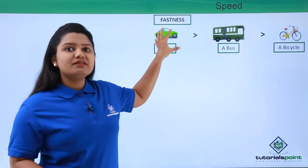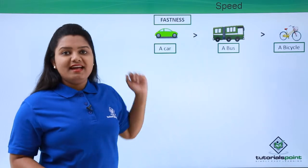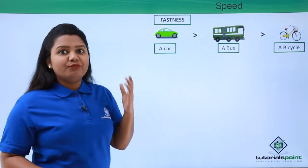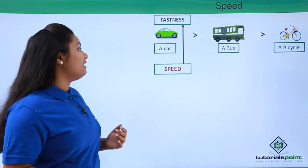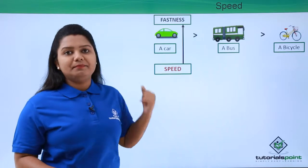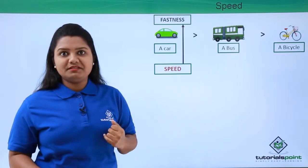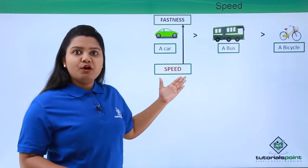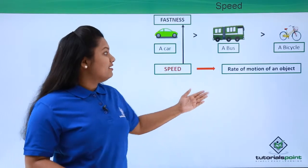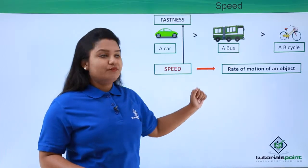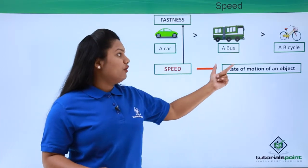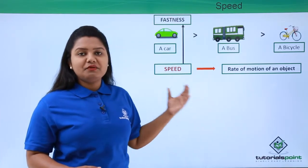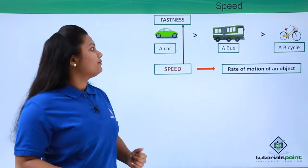This fastness of an object has a separate name which we call the speed of that particular object. We can say that the speed of an object is the rate at which it moves, or the rate of motion of an object is what we call the speed.